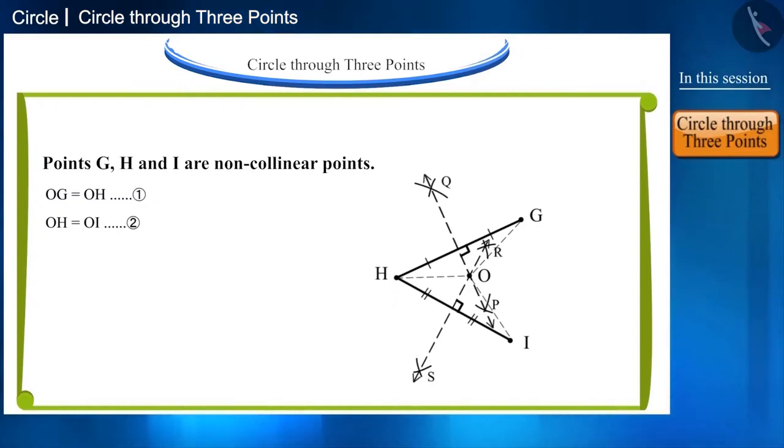Therefore, we can say that O, G is equal to O, H is equal to O, I, which means that points G, H and I are at the same distance from the point O.